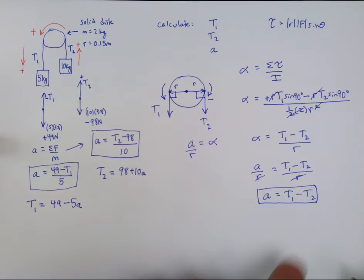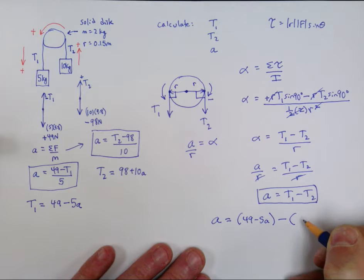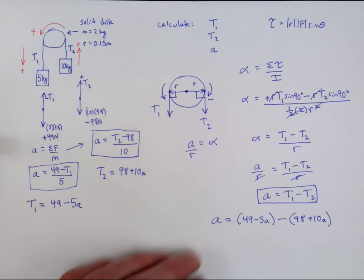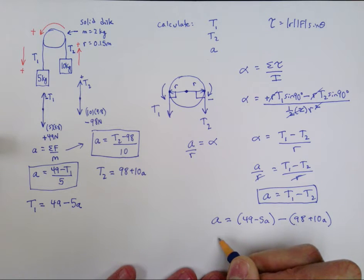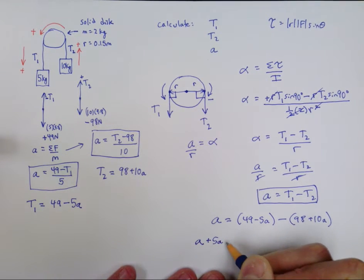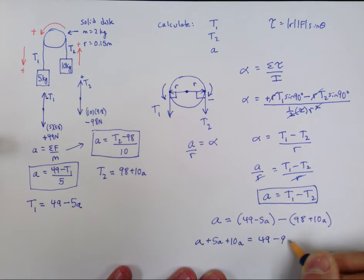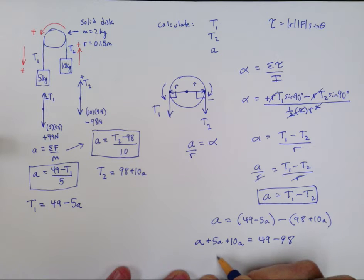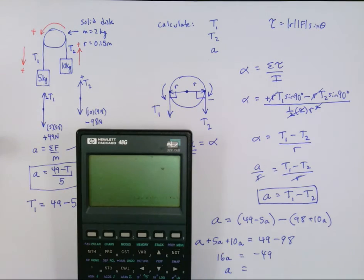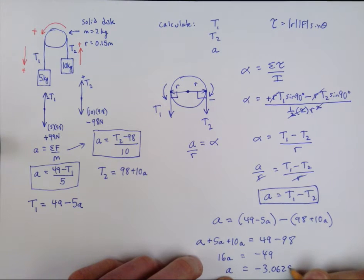Substituting T1 and T2 into the third equation: a equals (49 minus 5a) minus (98 plus 10a). Gathering the a terms gives a plus 5a plus 10a equals 16a, and the numbers give 49 minus 98 equals negative 49. So 16a equals negative 49, which means acceleration equals negative 3.0625 meters per second squared.